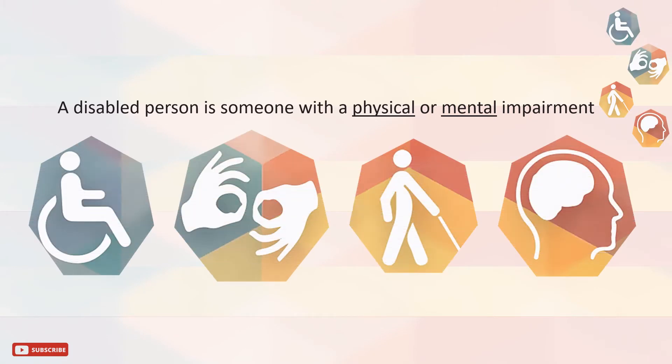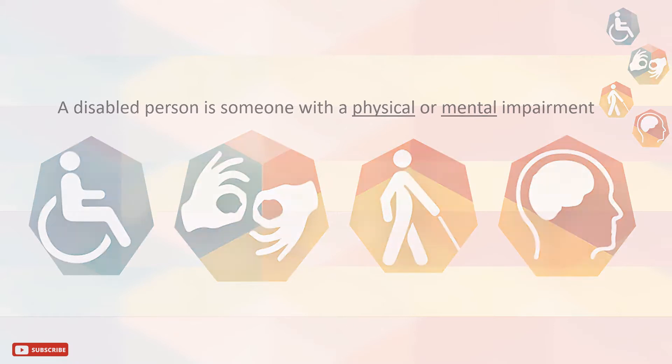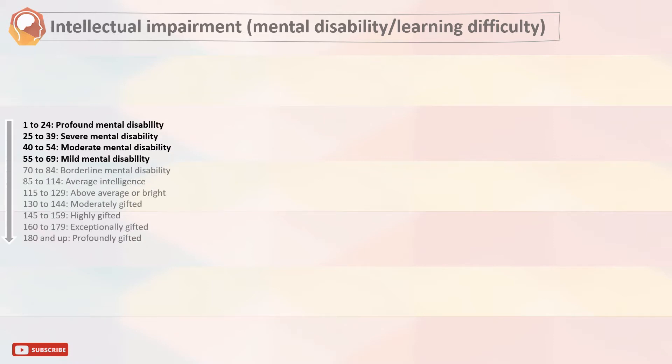A disabled person is someone with a physical or mental impairment which has a substantial and long-term adverse effect on their ability to carry out normal day-to-day activities. Starting with intellectual impairment, it includes mental disability and learning difficulty, in which the affected person may fall into one of these IQ levels.